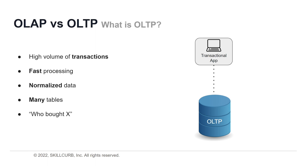OLTP systems use a relational database that can do the following: process a large number of relatively simple transactions; enable multi-user access to the same data while ensuring data integrity; support very rapid processing with response times measured in milliseconds; provide indexed data sets for rapid searching, retrieval, and querying; and be available 24-7, 365 days a year with constant incremental backups.